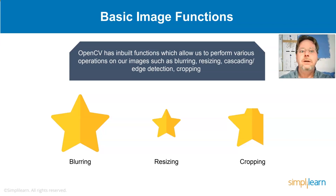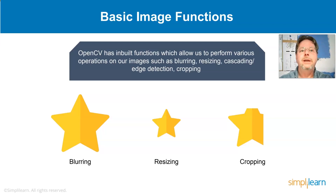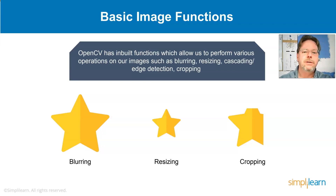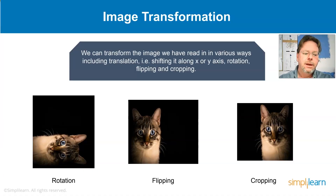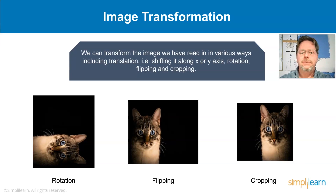There's also image transformation. Beyond blurring, we can rotate images, shift them left or right, flip them, and crop them. All of these are very easy to do in the OpenCV package. Going back ten years, people were writing all this code manually — now it's all built in and continuously optimized, so you can do a lot without having to do the heavy lifting underneath.